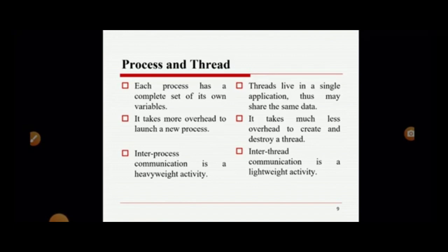What is the difference between a process and a thread? A program in execution is called a process, and each process has a complete set of its own variables. But threads live in a single application and may share the same data. A process takes more overhead to launch, while a thread takes much less overhead to create and destroy. Inter-process communication is a heavyweight activity, whereas inter-thread communication is a lightweight activity.